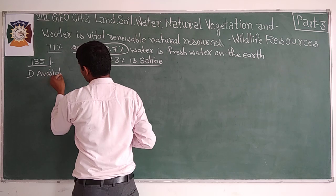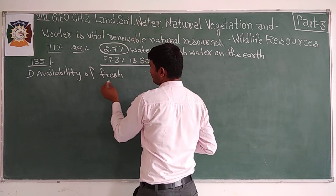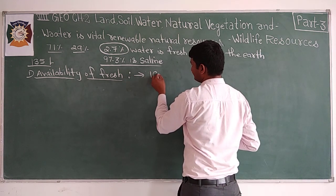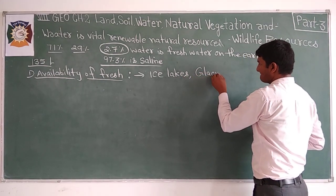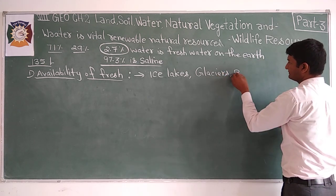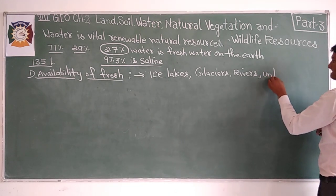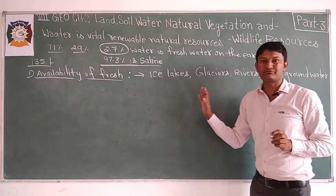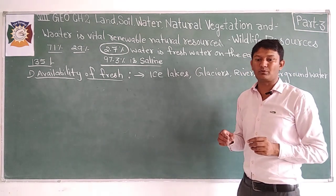Fresh water is available in ice lakes, glaciers, rivers, and underground water. These are the sources from which fresh water fit for human consumption can be obtained. Now let us look at the problems of water availability.